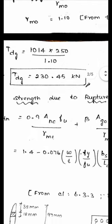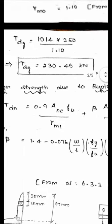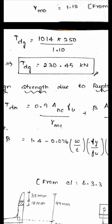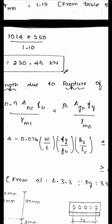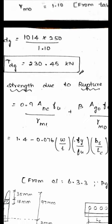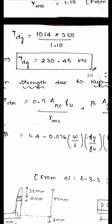Next, we calculate the design strength due to rupture of the critical section. For angle sections, the rupture strength is affected by shear lag. The formula is TDN = 0.9 × ANC × Fu / γM1 + β × AG0 × Fy / γM0, where ANC is the net area of the connected leg and AG0 is the gross area of the outstanding leg. The unknowns are ANC, β, and AG0.